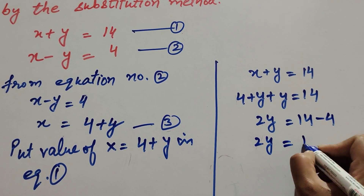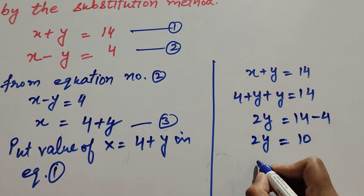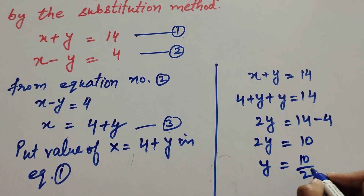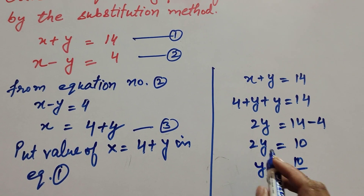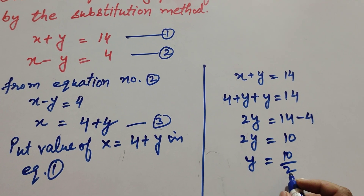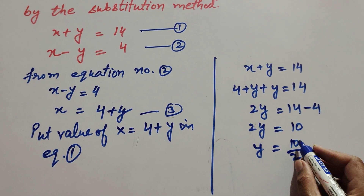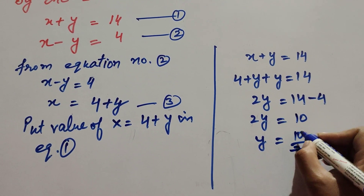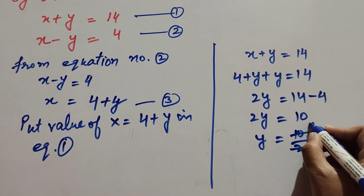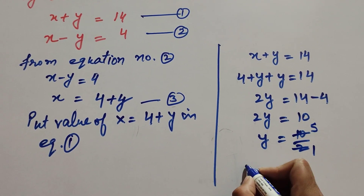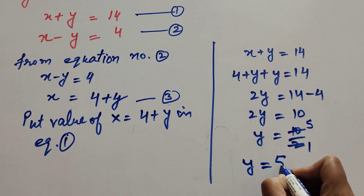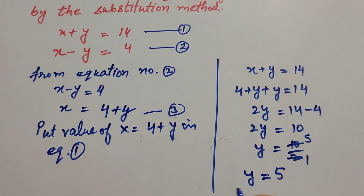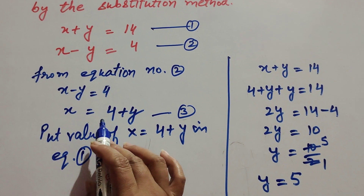So 2y equals 10. Transposing 2 to the right-hand side, y equals 10 over 2. Since 10 and 2 are both divisible by 2, we cancel them — 2 ones are 2, 5 twos are 10 — and y is equal to 5.